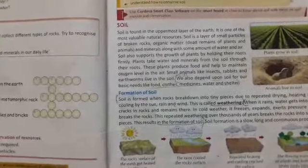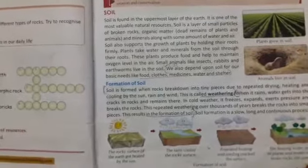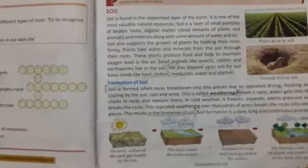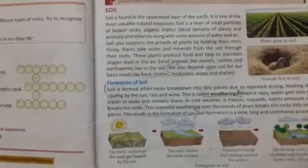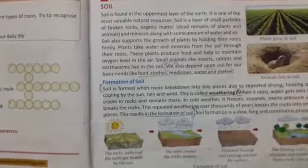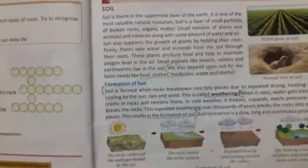When it rains, water gets into the cracks in rocks and remains there. In cold weather, it freezes, expands, exerts pressure and breaks the rocks. This repeated weathering over thousands of years breaks the rocks into small pieces and this results in the formation of the soil.